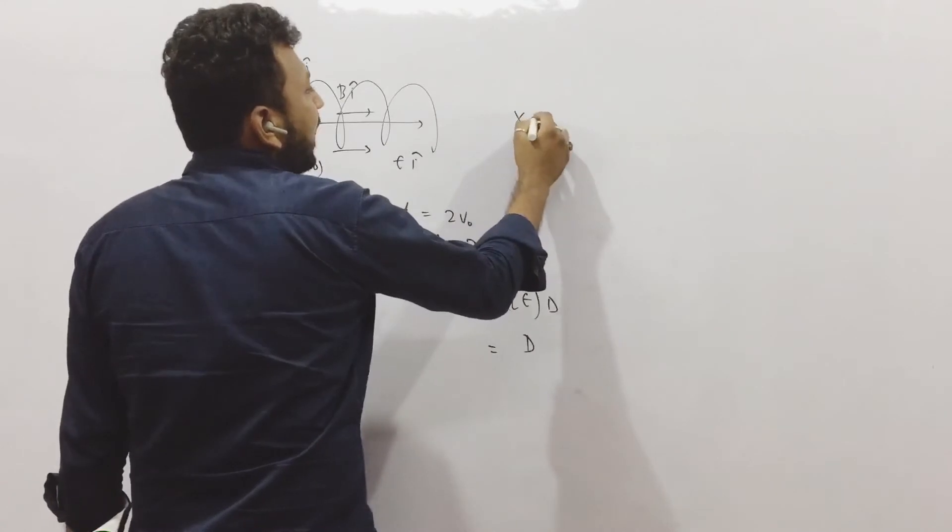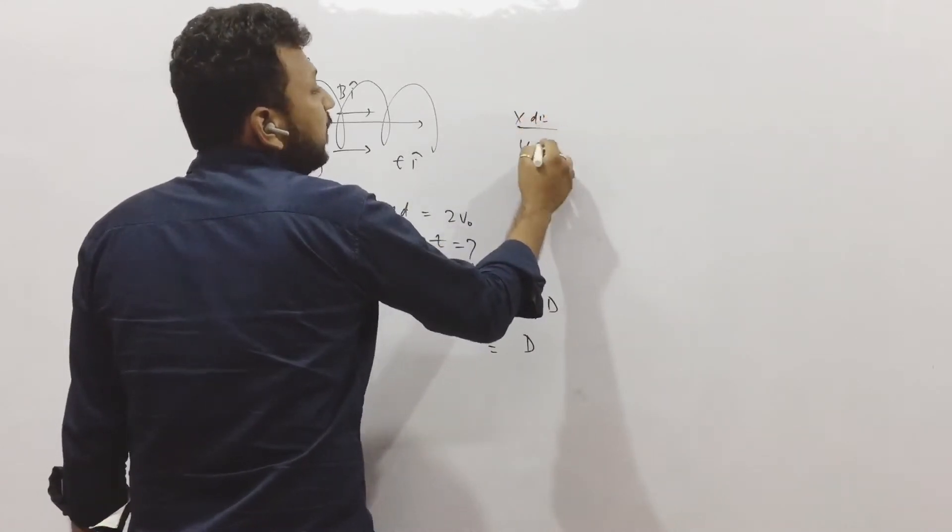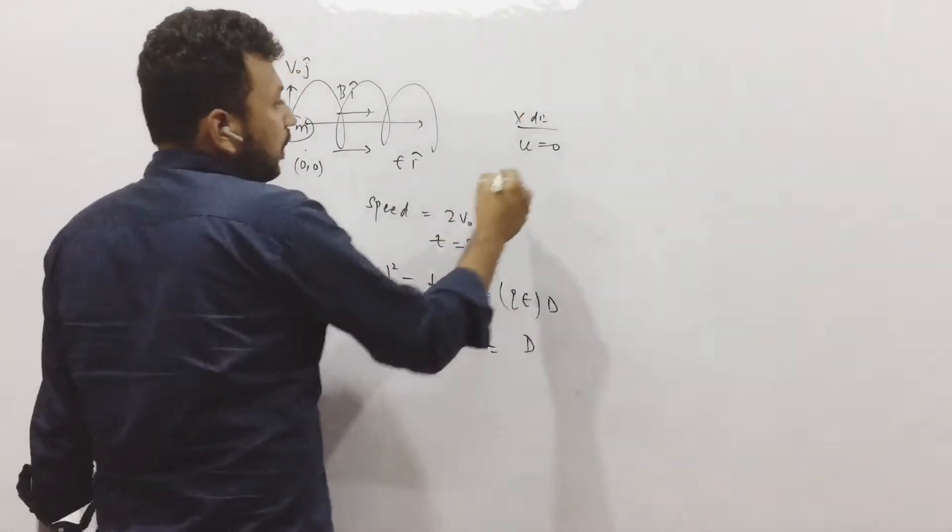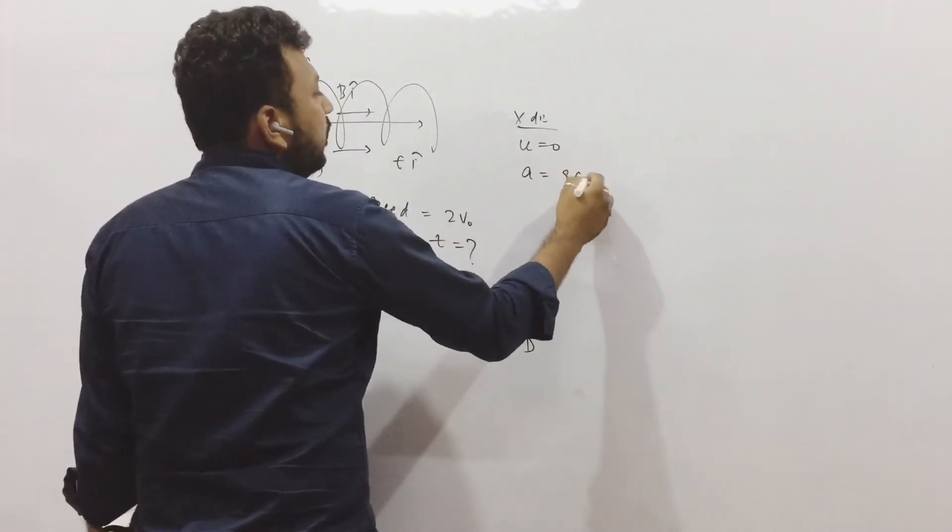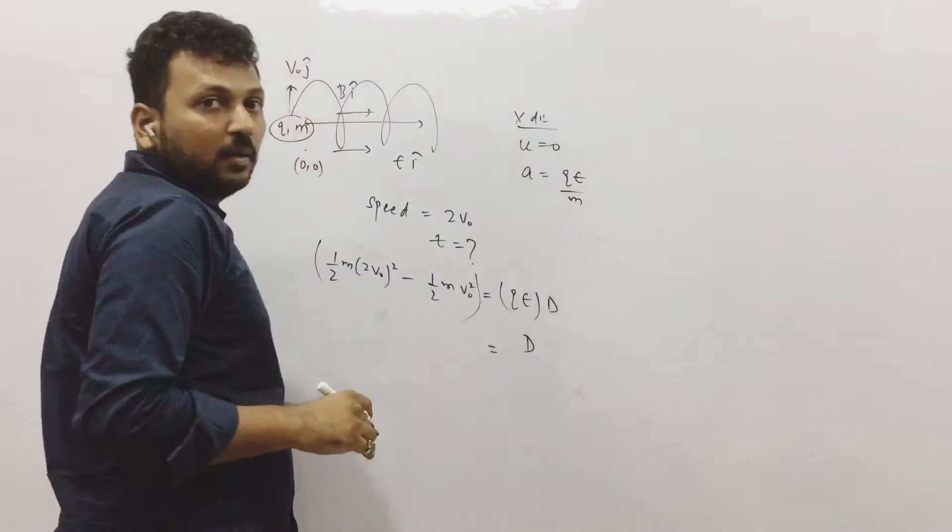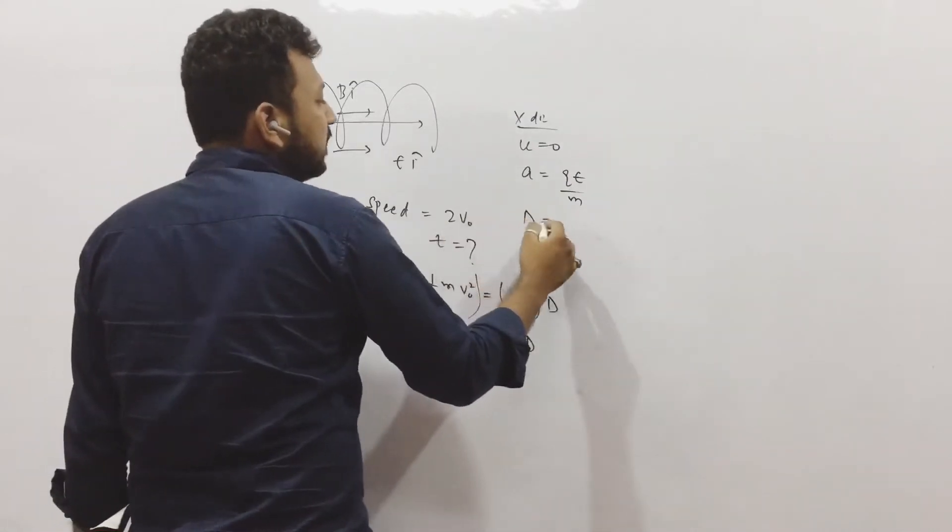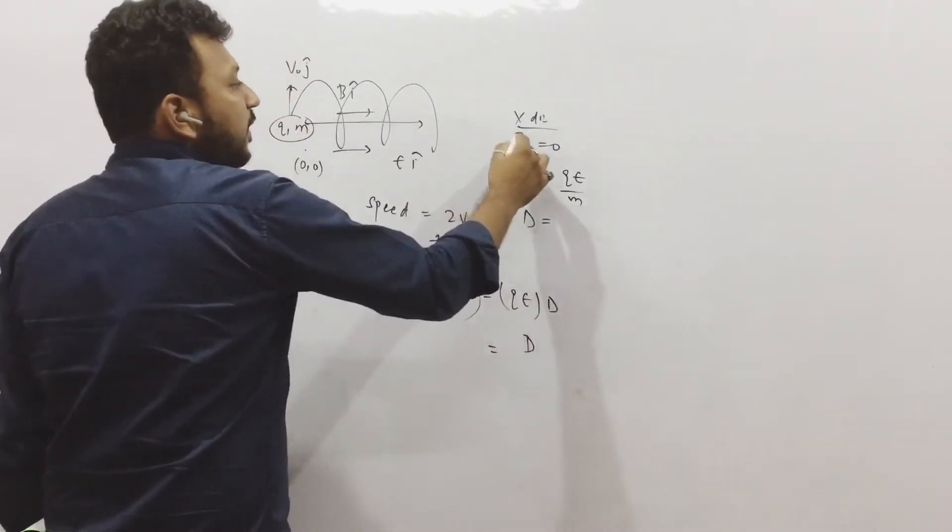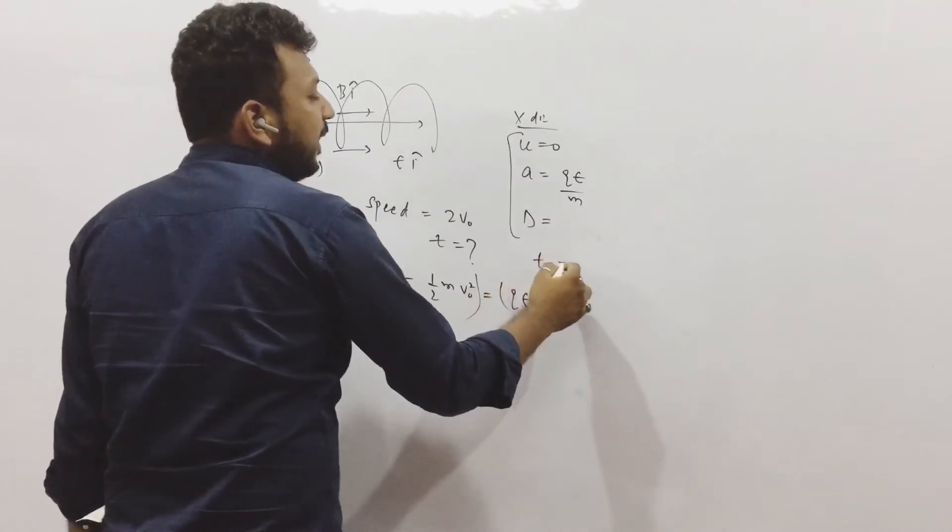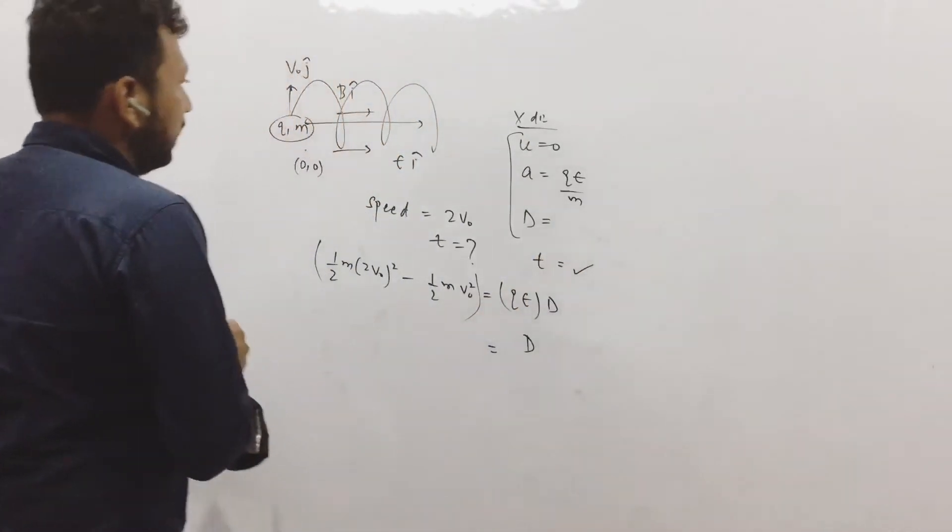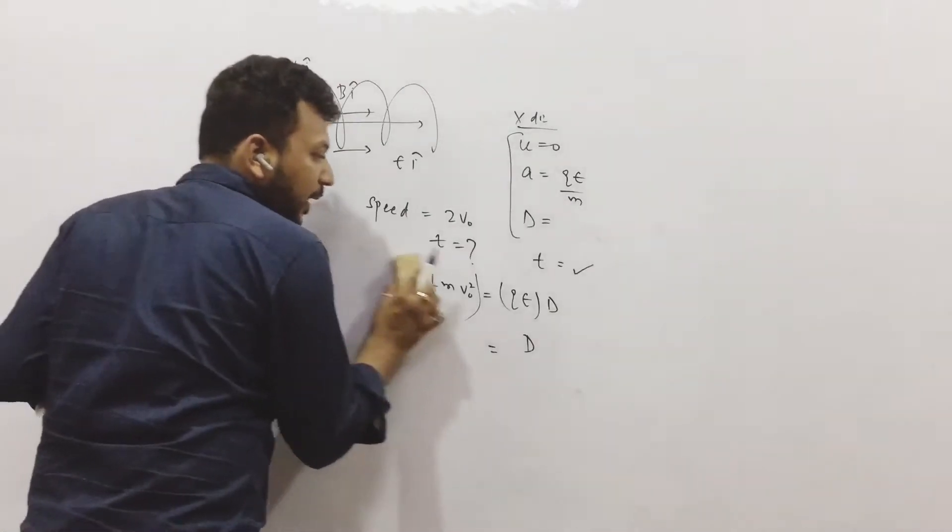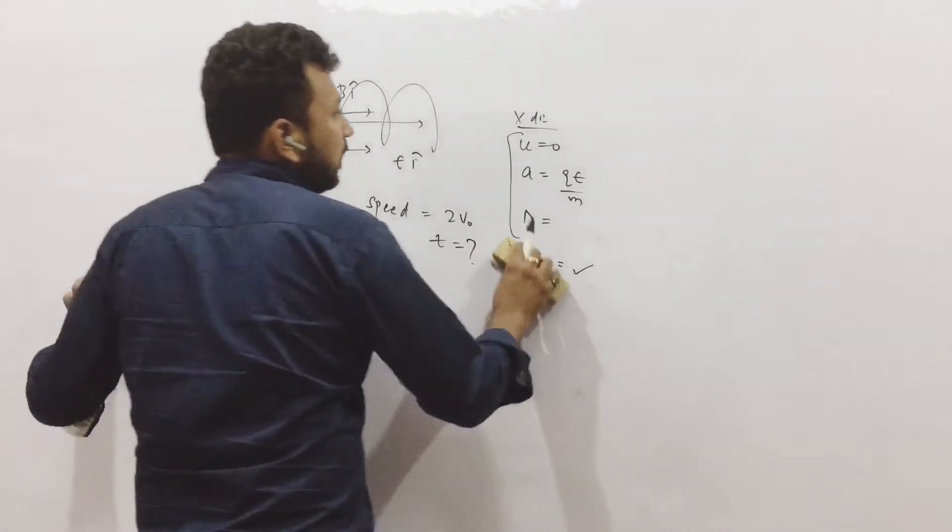Now we can see, in the x direction, initial velocity is 0. What is the acceleration in x direction? That is q into E upon mass. And we can calculate the distance from this point. When we know three things in kinematics, we can find the time period. So this is one way we can solve it. I hope it is clear. Let us discuss the other way.